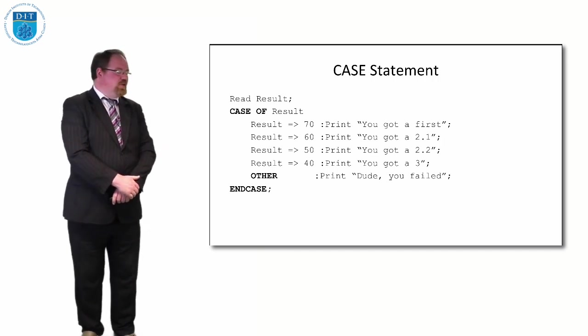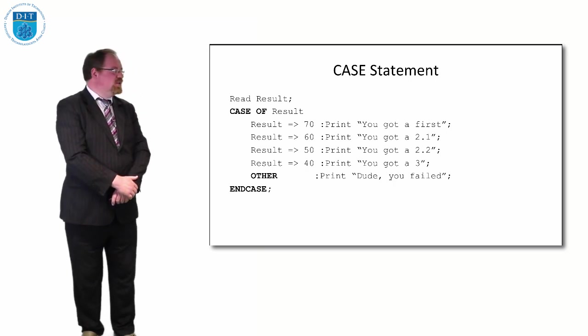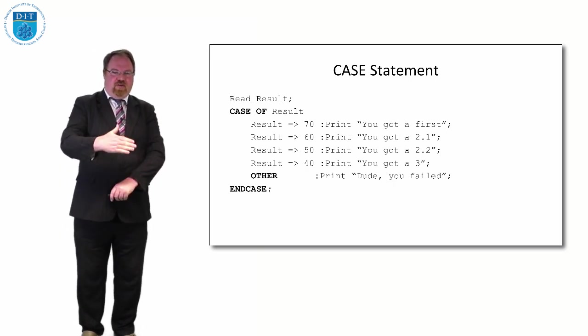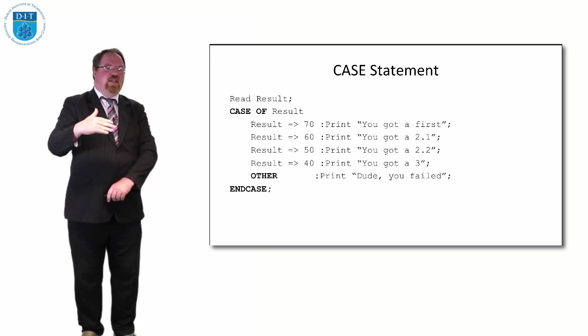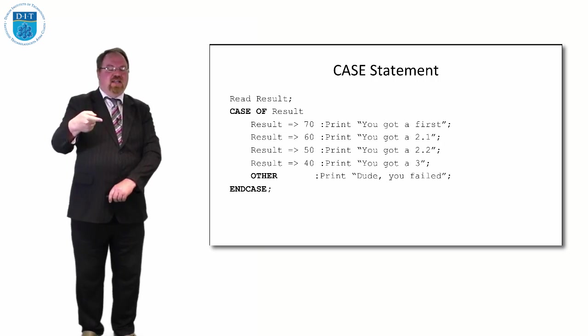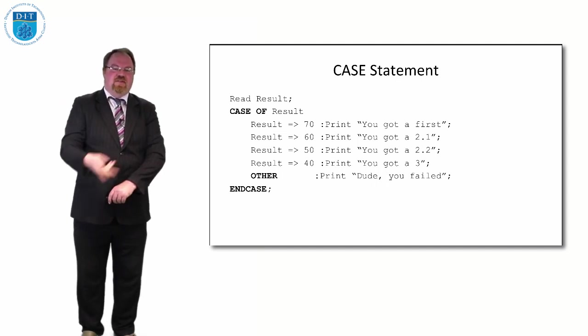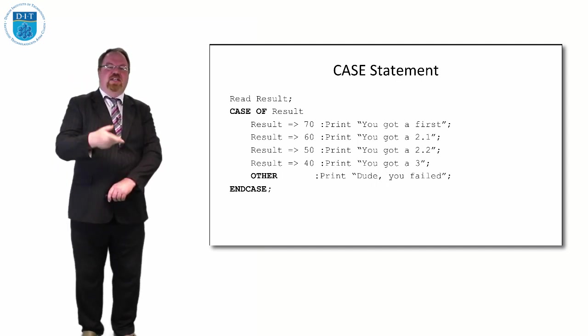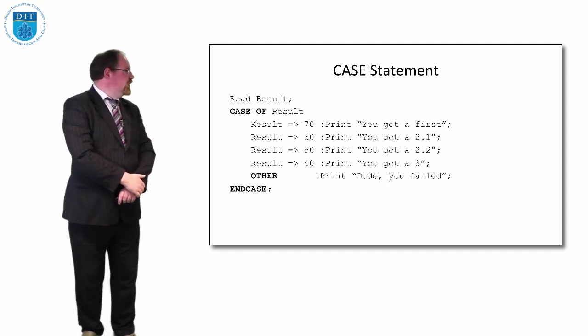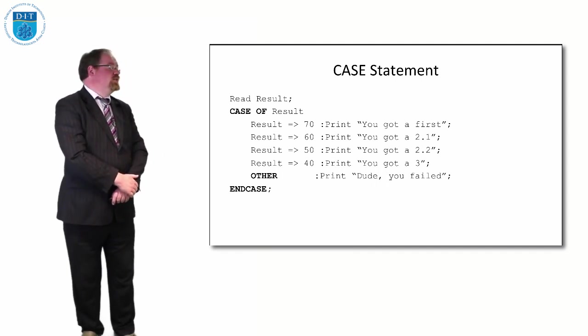We could print out as follows: over or equal to 70 it's a first. If it goes into that then it will finish, it will jump down to the ENDCASE. If it's less than or equal to 60, that means it's between 69 and 60, I'll give you 2.1. Between 59 and 50 will give you 2.2, between 49 and 40 will give you a third, and less than 40 says dude, you failed. That's our ENDCASE there.